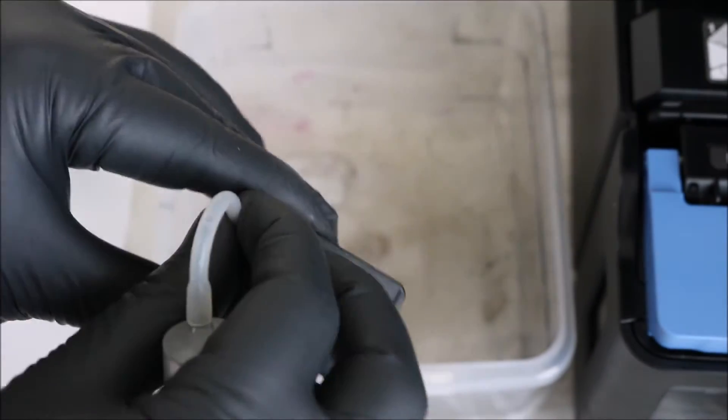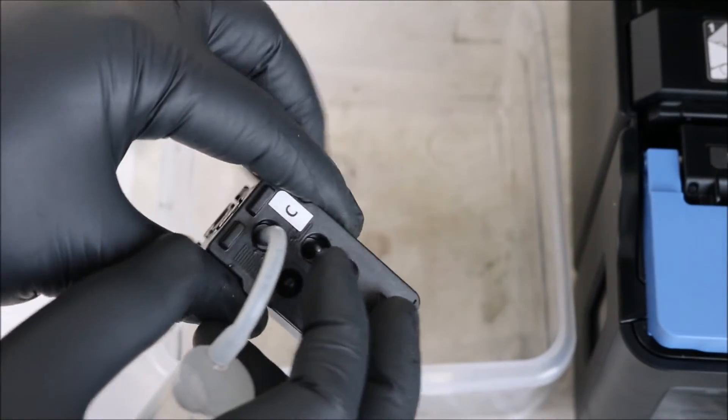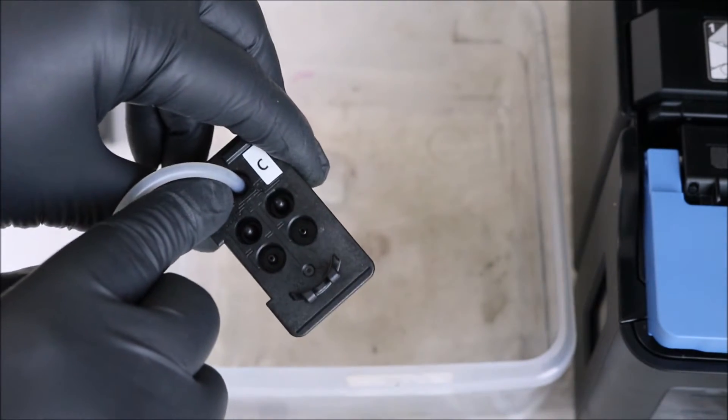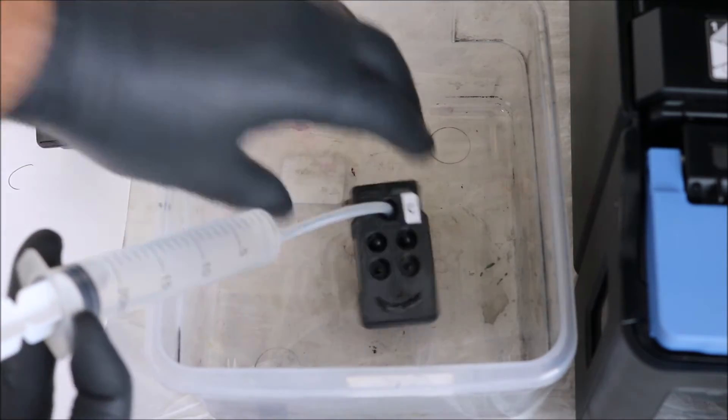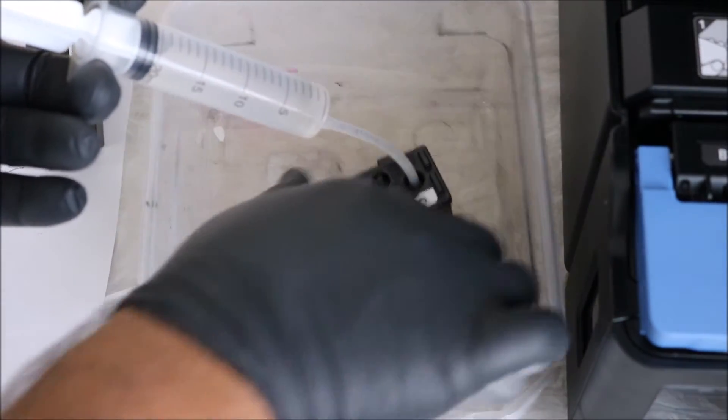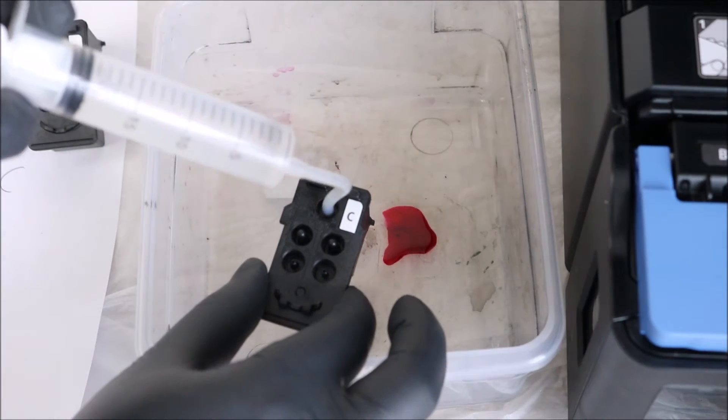So basically what you're doing here is once that is attached, you're going to want to have that print head in the plastic container and you're going to be flushing this through all of the cleaning solution. You want about, I would say, 10 milliliters is what you're going to want to push through at first.